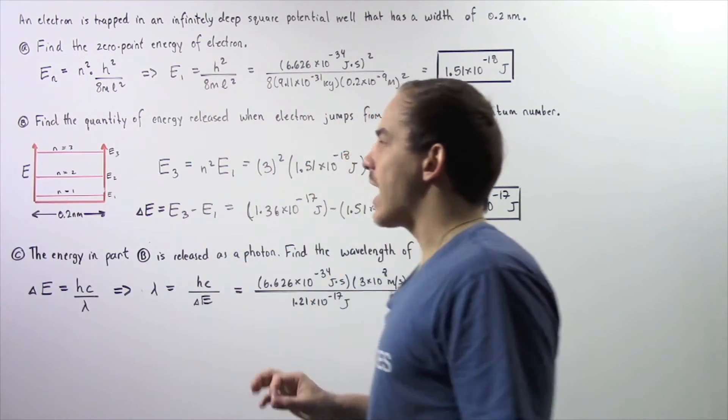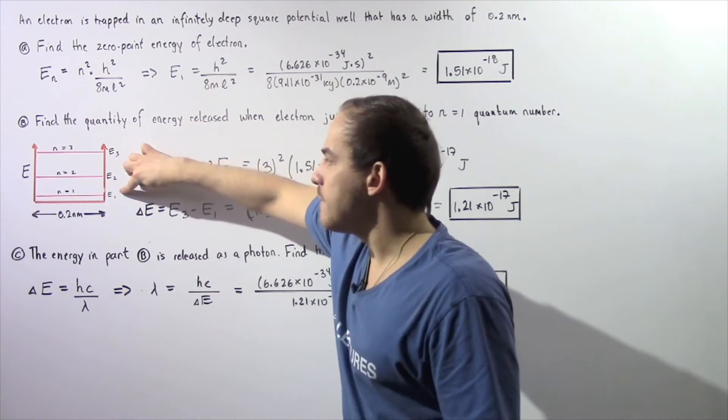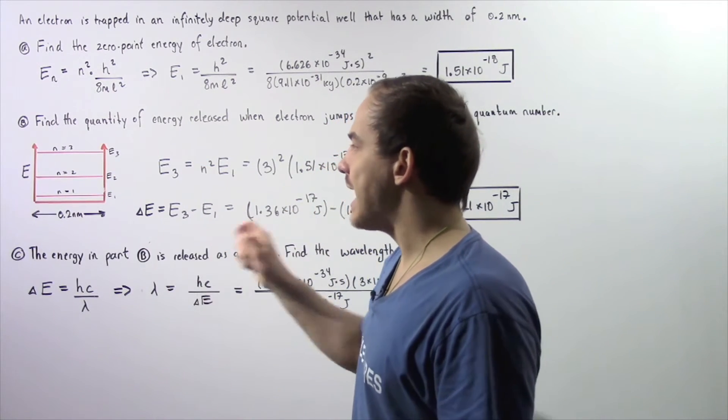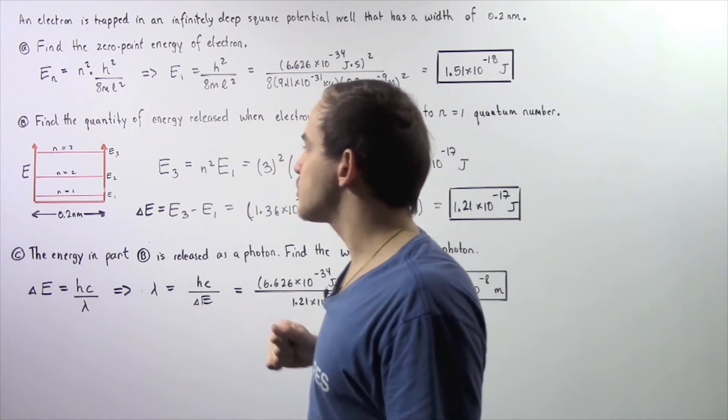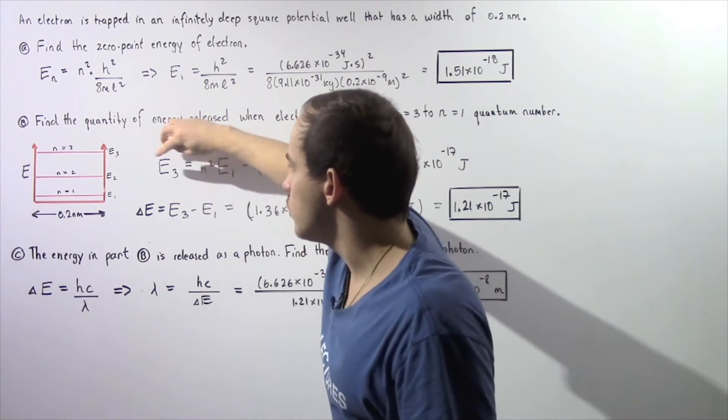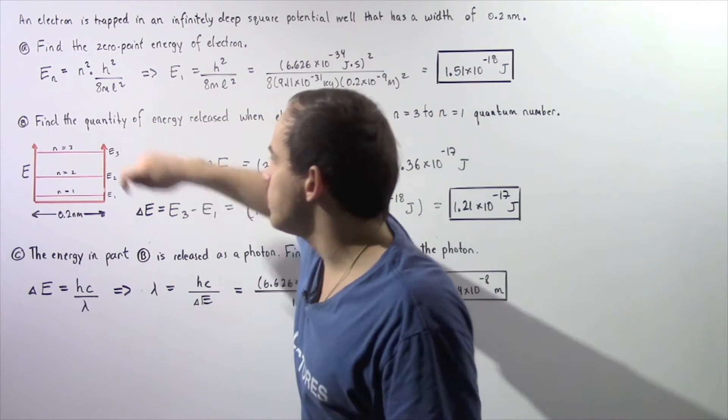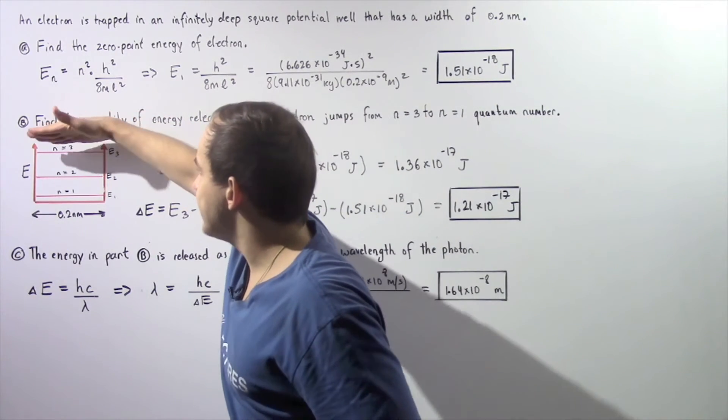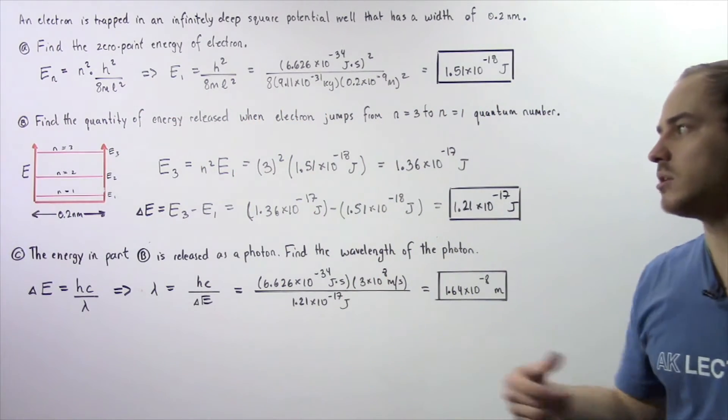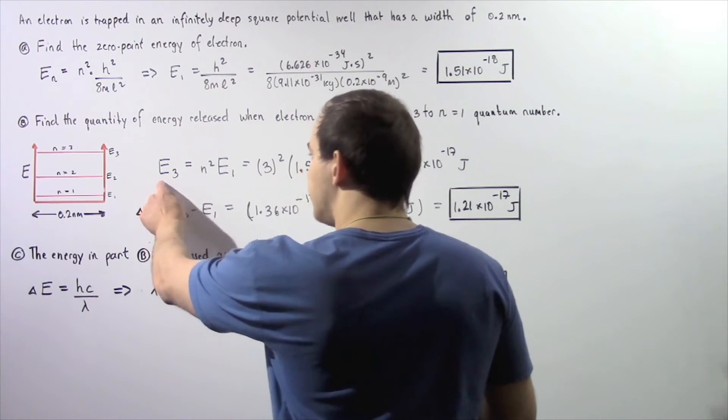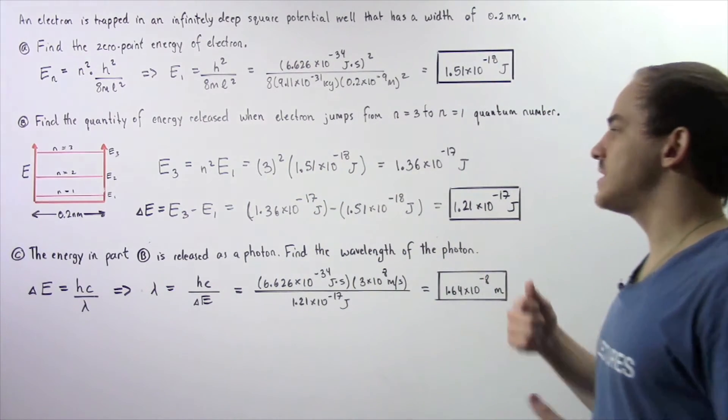The y-axis represents our energy. Notice, n equals 1 is the energy of our particle when the quantum number is n equals 1. That represents the zero-point energy. So the next discrete quantity of energy is n equals 2. That is equal to E2. And finally, n equals 3 is given by E3. So our electron begins here, jumps down to here, and a certain quantity of energy is released as a result of that transition. If we calculate what E3 is, then we could take the difference, and that will give us our answer.